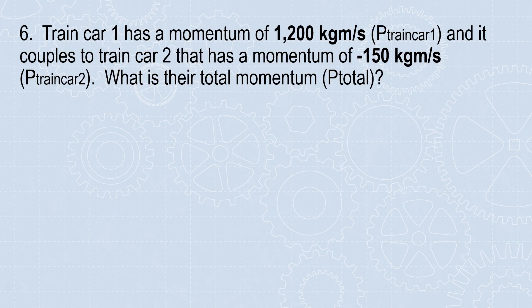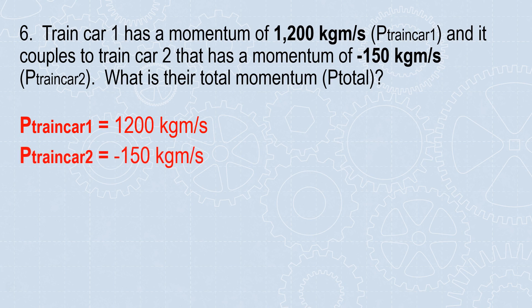Number 6: Train car 1 has a momentum of 1,200 kilogram meters per second and it couples to train car 2 that has a momentum of negative 150 kilogram meters per second. What is their total momentum?